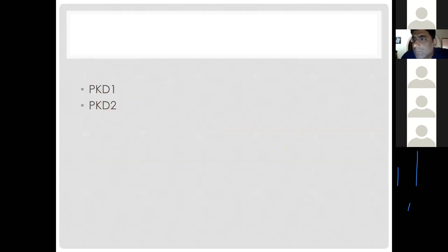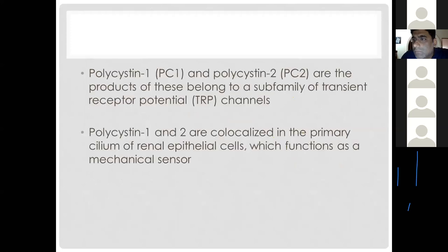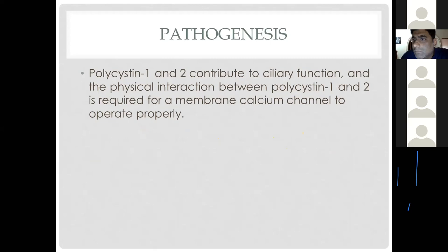The responsible genes are PKD1 and PKD2, which encode the protein products polycystin-1 and polycystin-2. These polycystins are a subfamily of transient receptor potential channels involved in the ciliary lining of epithelial cells, functioning as mechanical sensors that control calcium movement within cells. Physical interaction between polycystin-1 and polycystin-2 is required for the membrane calcium channel to operate properly.